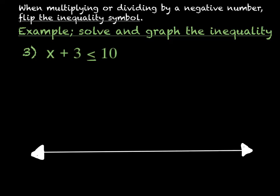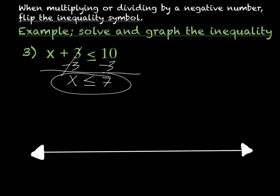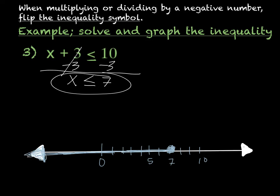For this next example, we want to solve and graph the inequality. We have x plus 3 is less than or equal to 10. To get rid of the plus 3, I'm going to subtract 3 from both sides. So x is less than or equal to 10 minus 3, which is positive 7. Then when I graph that, I put a filled in circle on 7 because it's less than or equal to, and shade anything less than that.